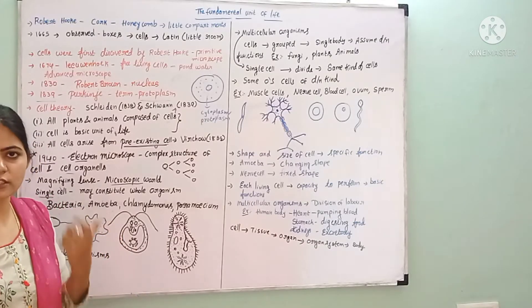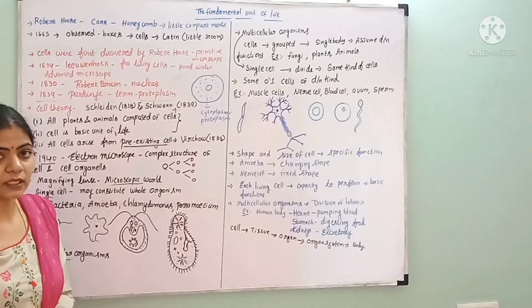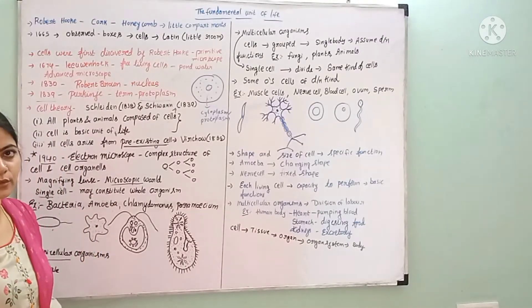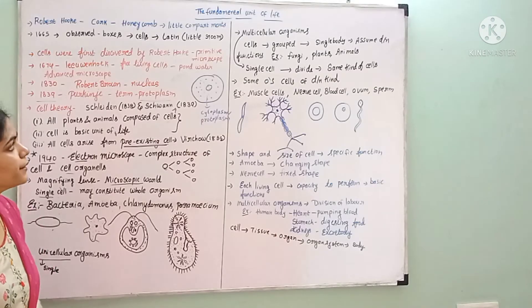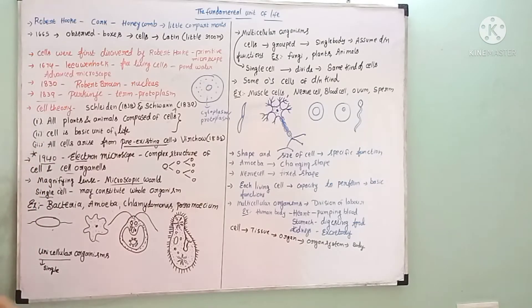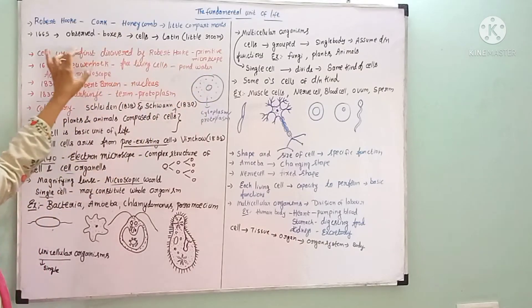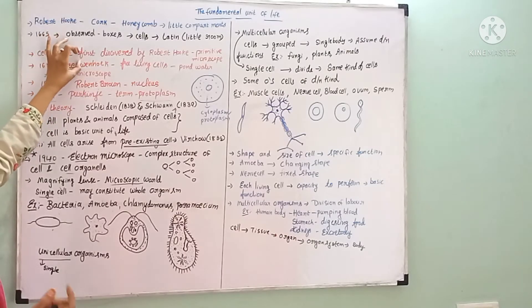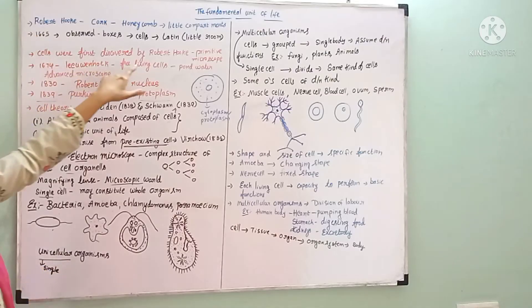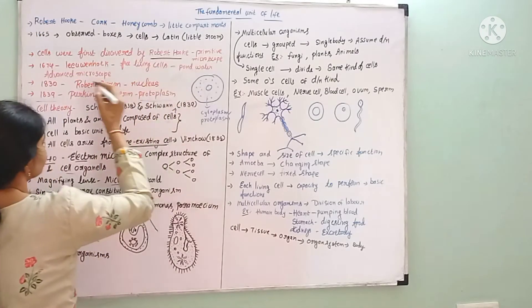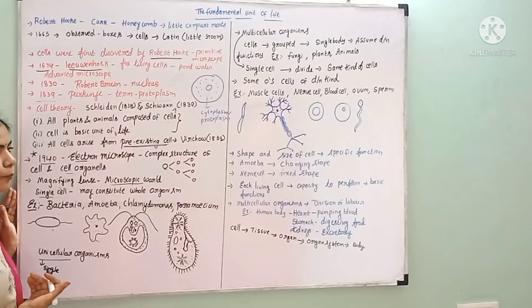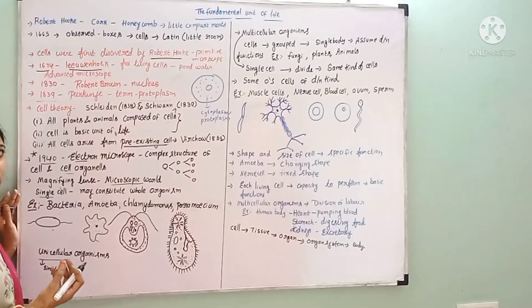The invention of the cell and naming it as the basic unit played a main role in biology. Till now we are using the same word — the cell. In the history of the cell, in 1665 Robert Hooke used a primitive microscope and discovered the cell.